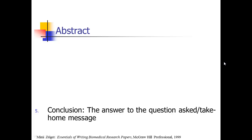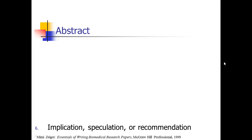There's one more thing that's very important to include. As Mimi Zeiger puts it, you need some kind of implication, speculation, or recommendation. That means one sentence at the end of your abstract where you go a little bit beyond and give people the 'why should I care' — the bigger picture implication. Why does this research matter? I'm scanning abstracts a lot, and I need that to be able to say why I should care about a paper. Have that last thing in there for the reader to really understand why your research is important.